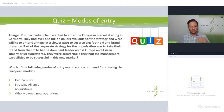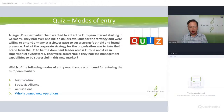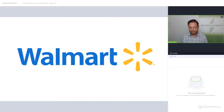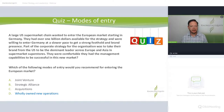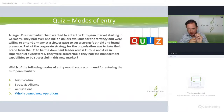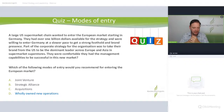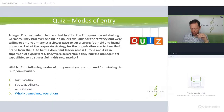Modes of entry quiz: pause the video and have a go. The answer is wholly owned new operations. The company is Walmart — it's a true case. Walmart wanted to go into Germany and had a huge amount of capital. They were very clear about taking the Walmart brand and American culture into the European market, wanting to be the dominant leader. They weren't interested in joint ventures or strategic alliances, and they wanted to control everything — so wholly owned operations was the best approach.